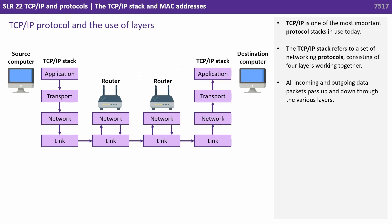TCP/IP is one of the most important protocol stacks in use today. The TCP/IP stack refers to a set of networking protocols consisting of four layers working together. All incoming and outgoing packets pass up and down through the various layers.